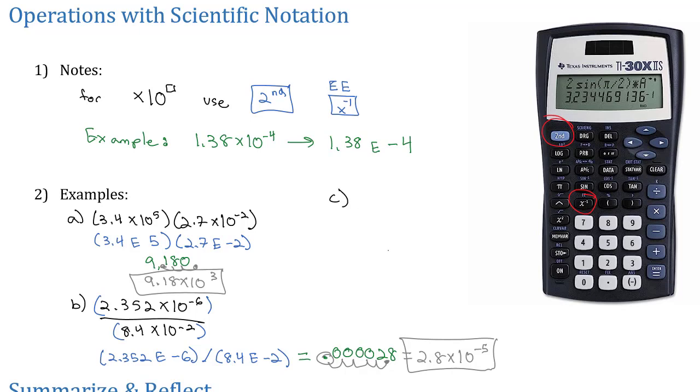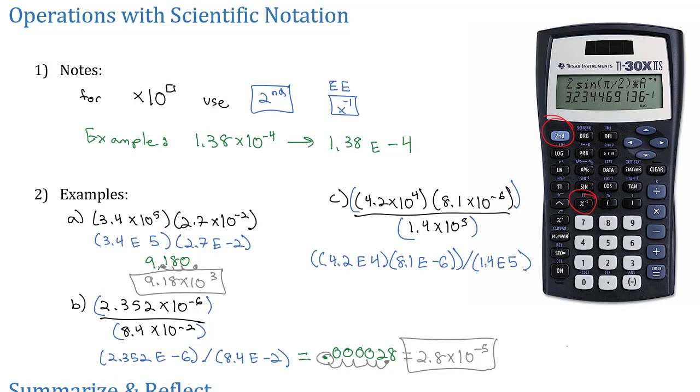Let's do one more, maybe an extra challenge problem. Let's try 4.2 times 10 to the fourth, times 8.1 times 10 to the negative sixth, divided by 1.4 times 10 to the fifth. Now again, as a reminder, if there's multiple stuff happening in the numerator or denominator in your calculator, you're going to have to put an extra set of parentheses around on that numerator or denominator. So we can type this in as parentheses for the numerator, parentheses for the first number, 4.2, second EE, 4, close the parentheses for that number. Then 8.1, second EE, negative 6, close the parentheses on the numerator, divide, open the parentheses on the denominator, 1.4, second EE, 5, close the parentheses on the denominator.